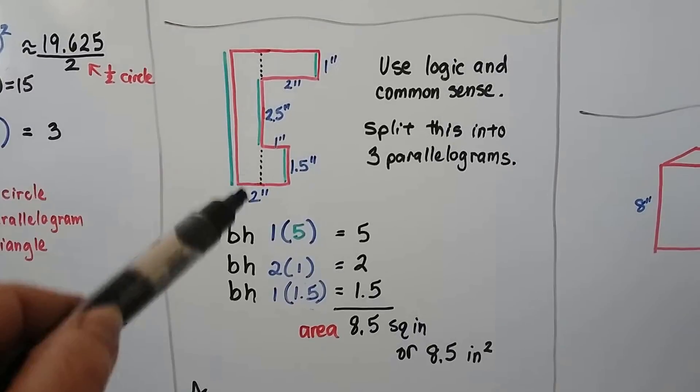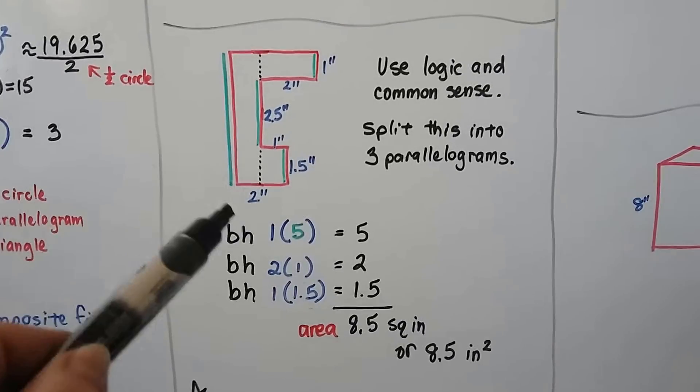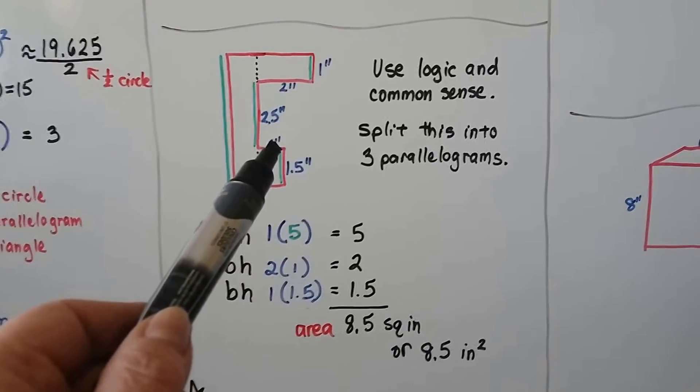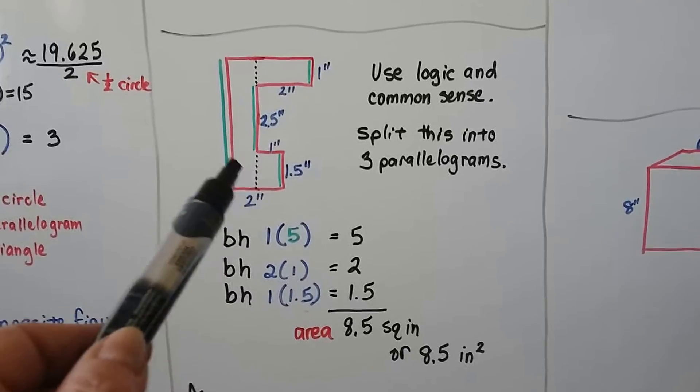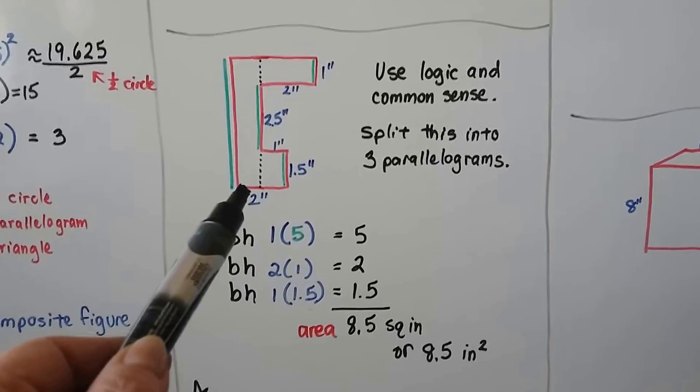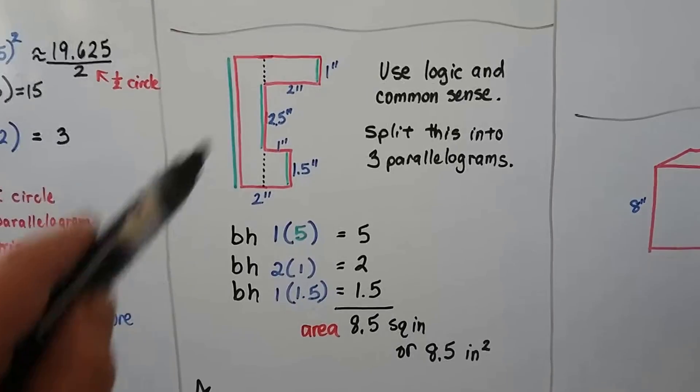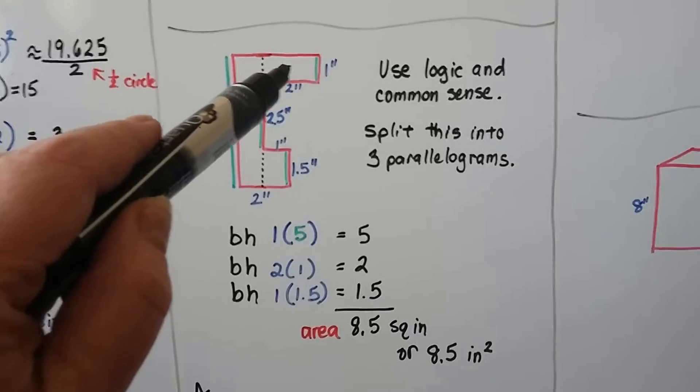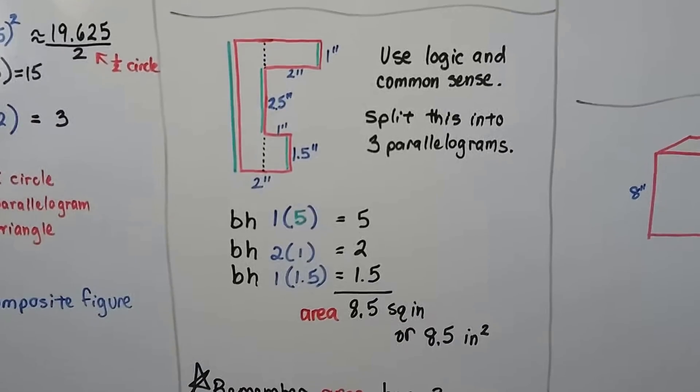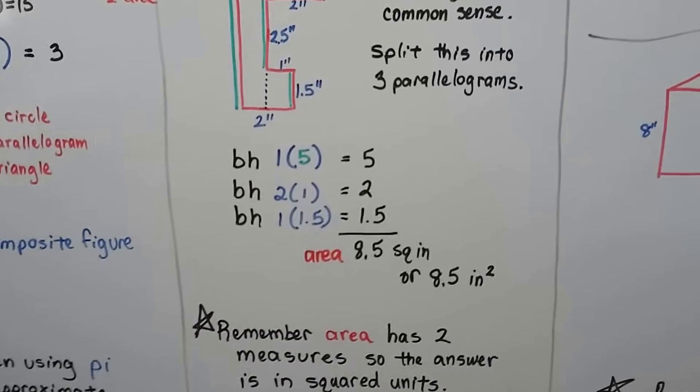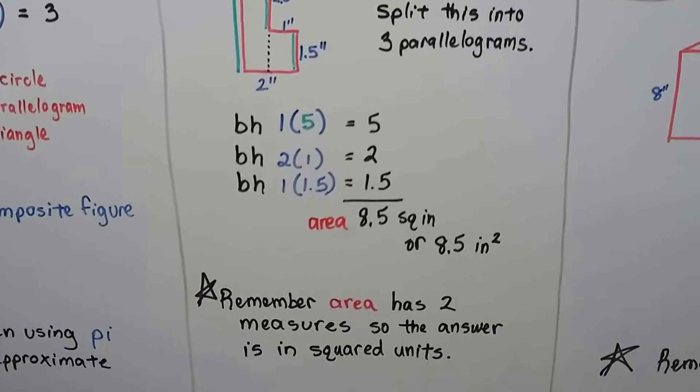So, for this tall skinny one, we have one times five, because this is showing a two inch base, and that's one inch, and that's not included in this tall skinny one. So, if we took that one away, that means that's one inch, and that's one inch. So, we have a one times five for this one, that's five. We have a one times two, and a one times 1.5. We add those together, and get 8.5 square inches, or 8.5 inches squared.